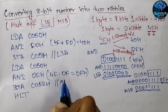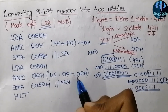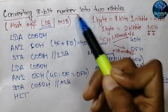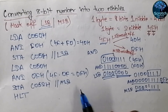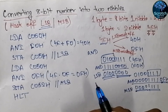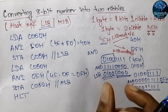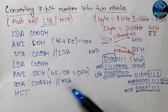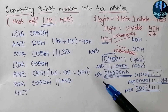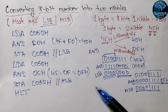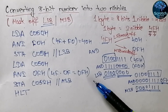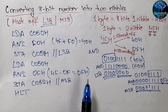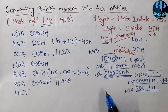Here we have masked off the least significant nibble and masked the most significant nibble, and in this way we have converted the 8-bit number into 2 nibbles. I hope this video is clear to you. In the next video we will see how to check whether the digits of a number are equal or not. If you like this video please subscribe to my channel to get notifications of upcoming videos. See you in the next video, thank you.